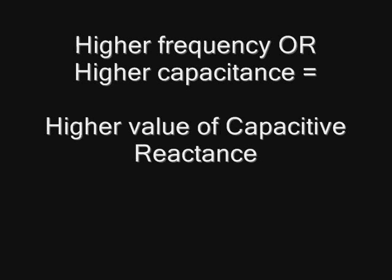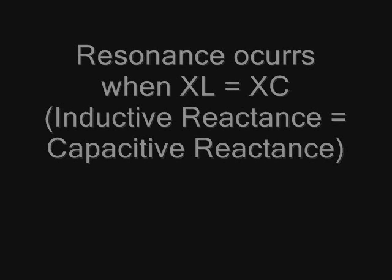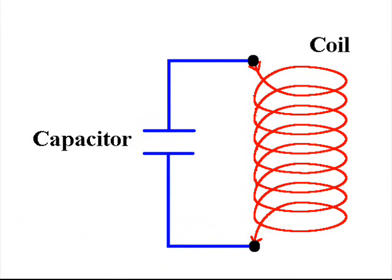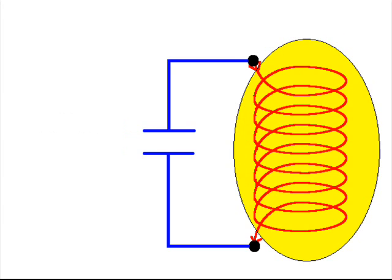Because capacitive reactance and inductive reactance can cancel each other out, if they are equal we will have a tuned resonant circuit. With a Tesla coil, a tuned resonant circuit will also cause a huge boost in voltage. In a resonant circuit, the energy is continuously alternating between the magnetic field around the coil and the charge in the capacitor.